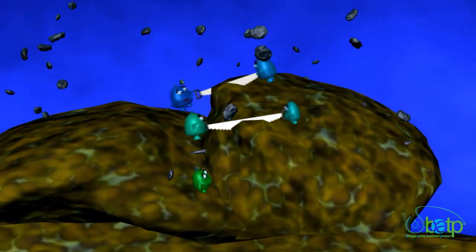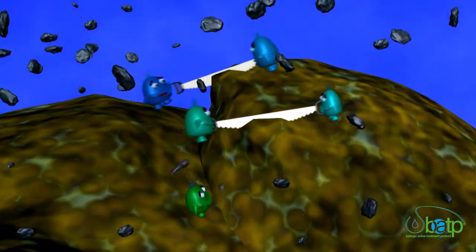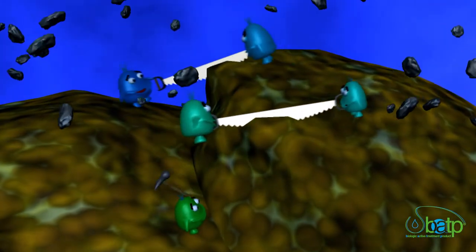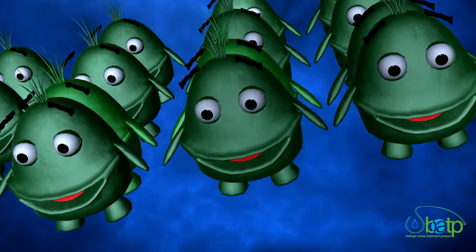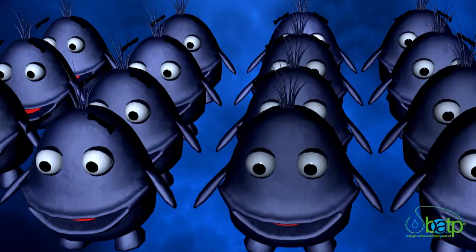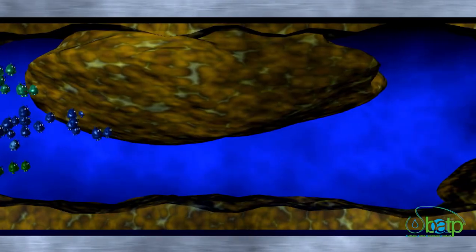The good bacteria live and reproduce by binary fission, a single cell dividing into two identical cells. The exponential growth of these good workers cleans pipes, septic tanks and any sewage system.